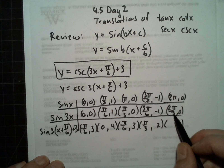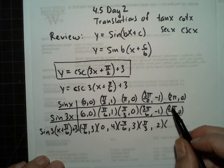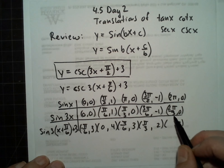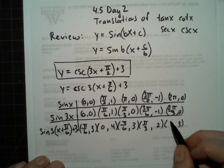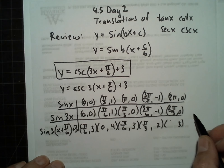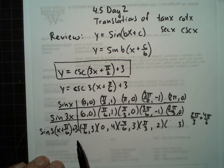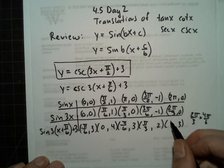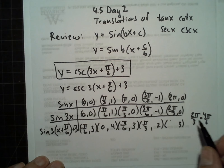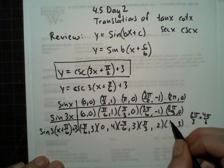2 pi over 3 is 4 pi over 6. 2 pi over 3, 4 pi over 6, minus pi over 6 will give you 3 pi over 3. 2 pi over 3, 4 pi over 6. If we subtract pi over 6, then we'll get 3 pi over 6, or pi over 2.